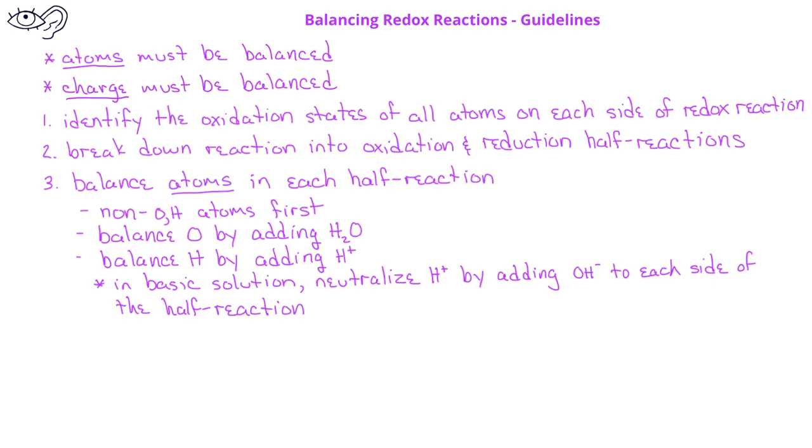The fourth step involves balancing the half reactions based on charge. In order to do this, you would add an electron to make the total charge balanced on each side of the half reaction.